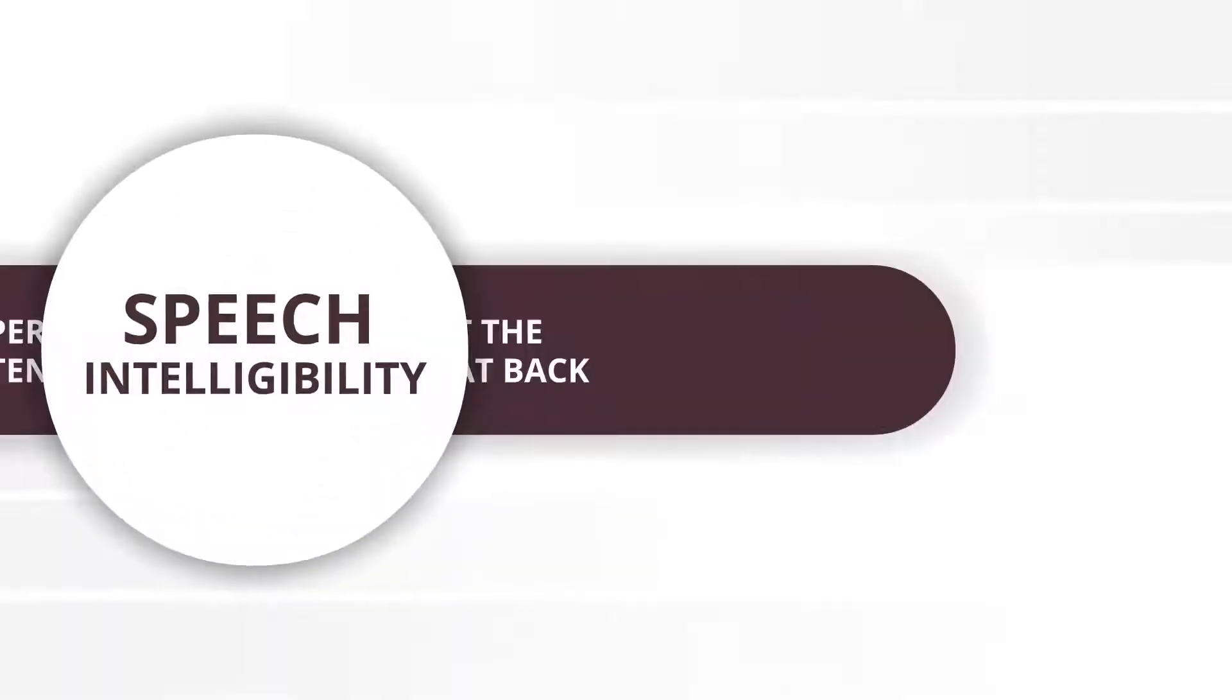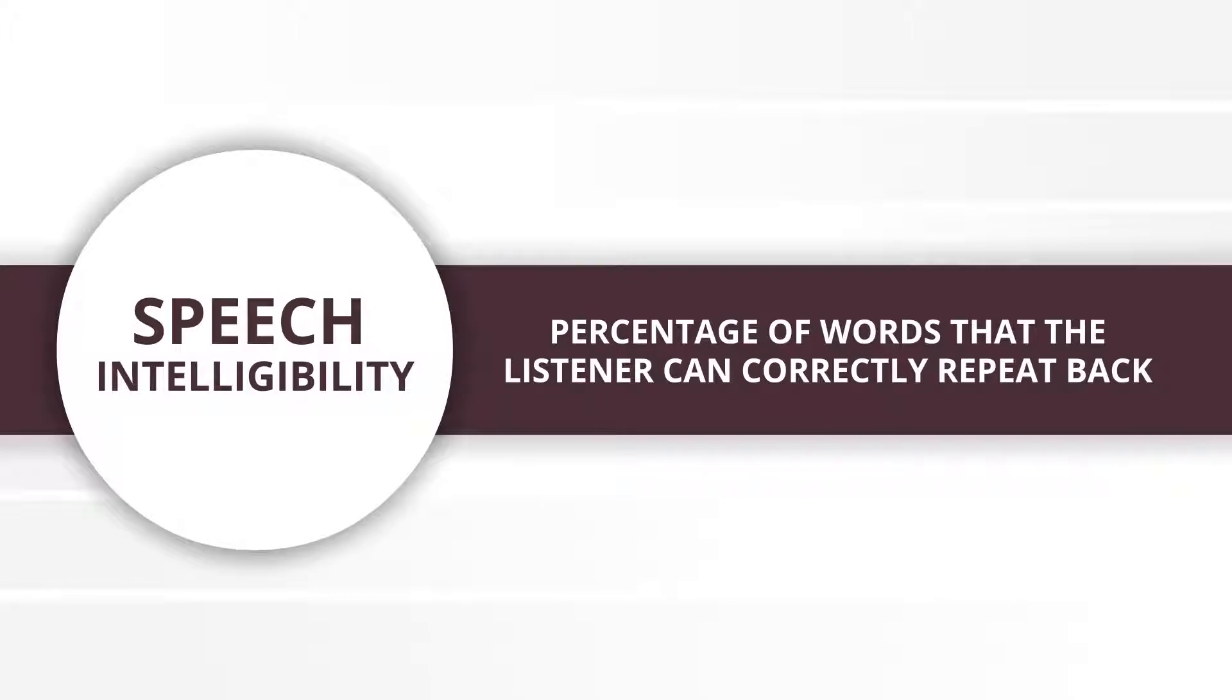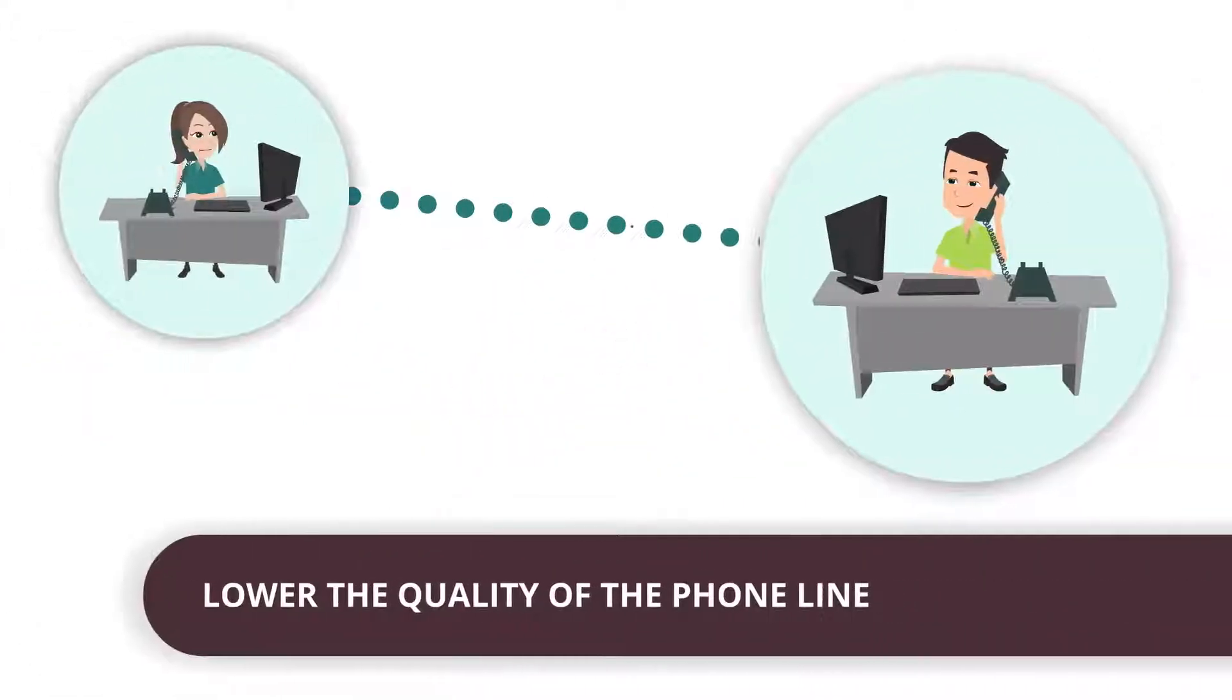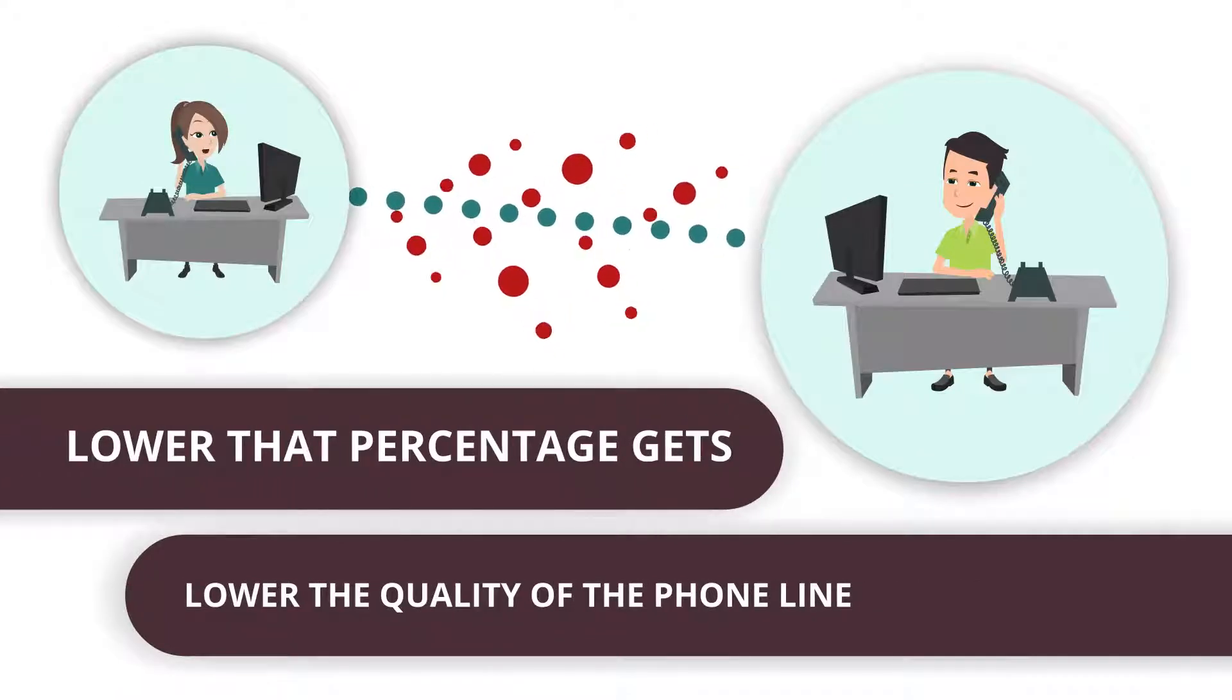In some cases, intelligibility is expressed as a percentage of words that the listener can correctly repeat back. The lower the quality of the phone line, the lower that percentage gets.